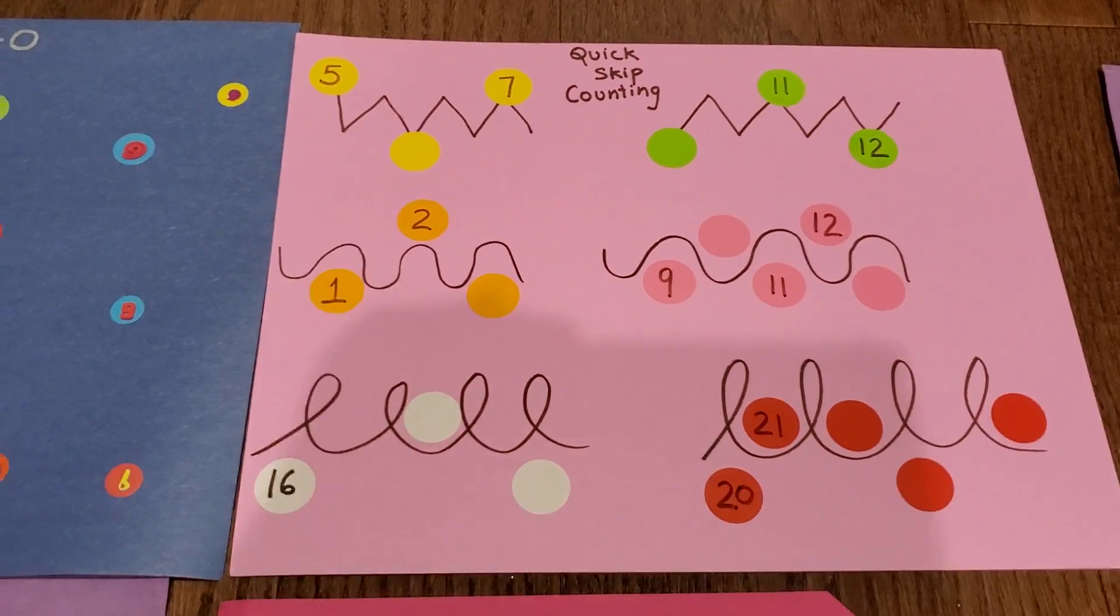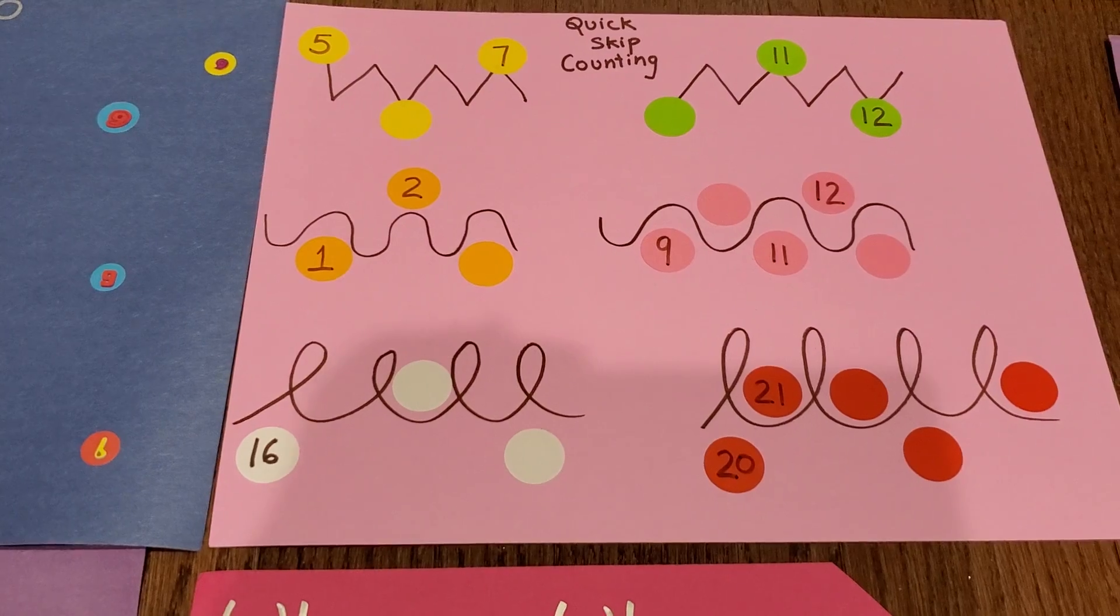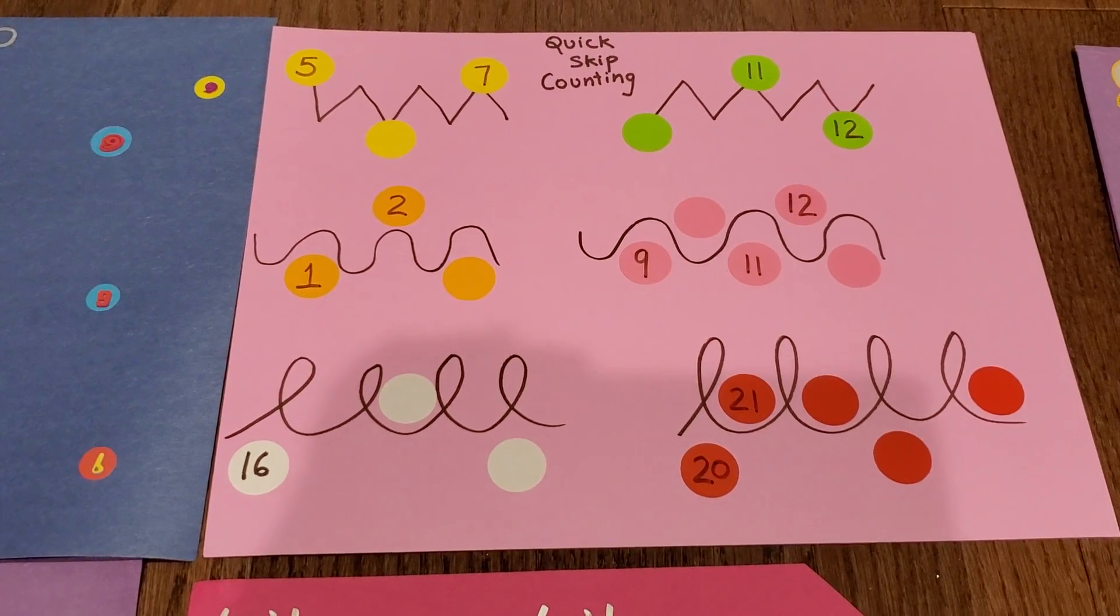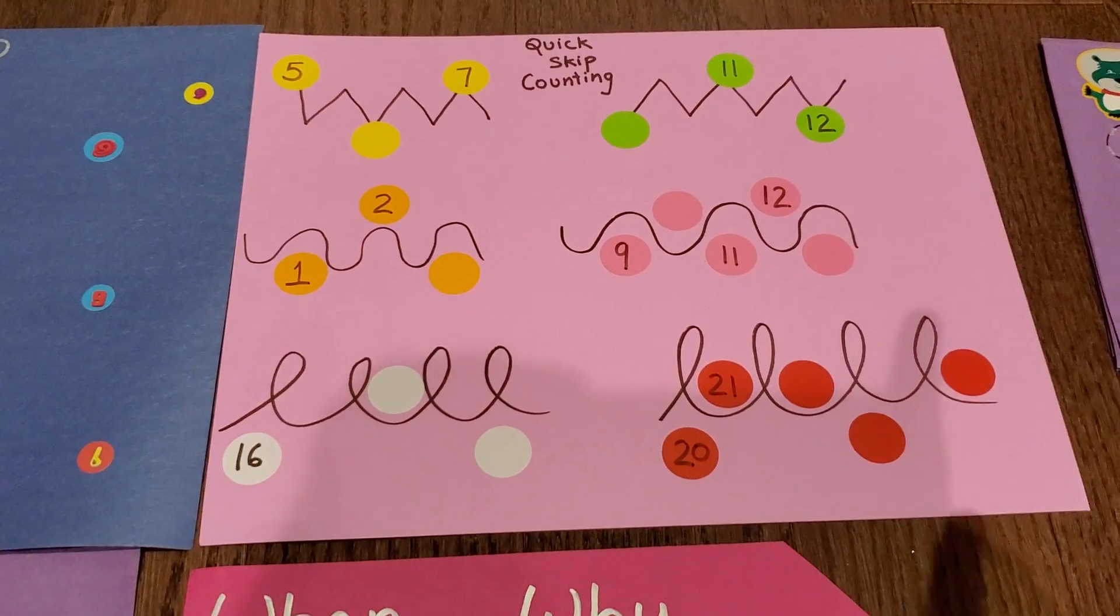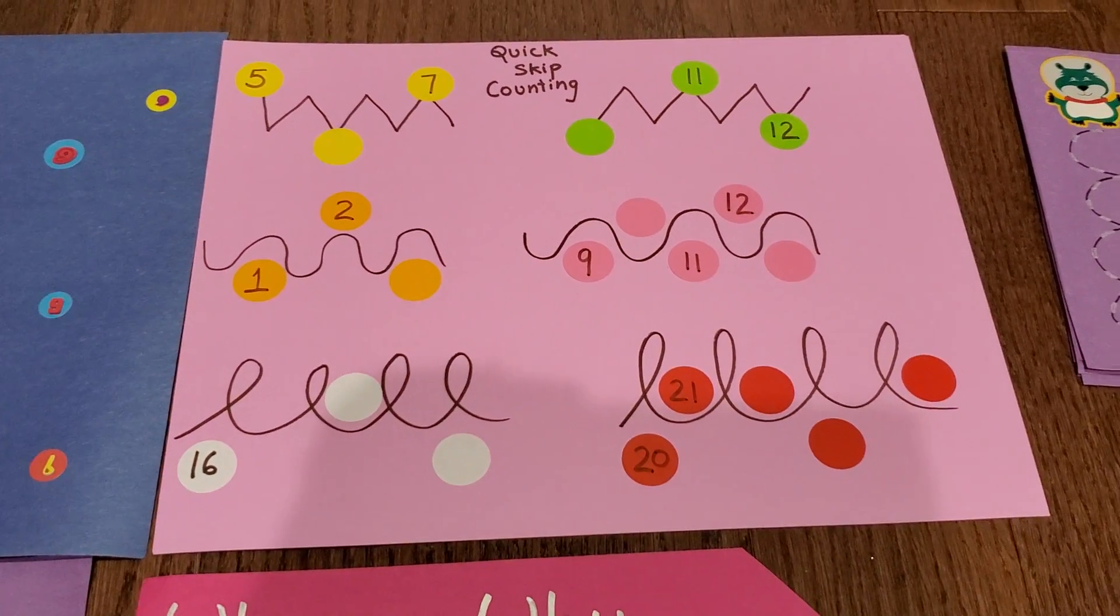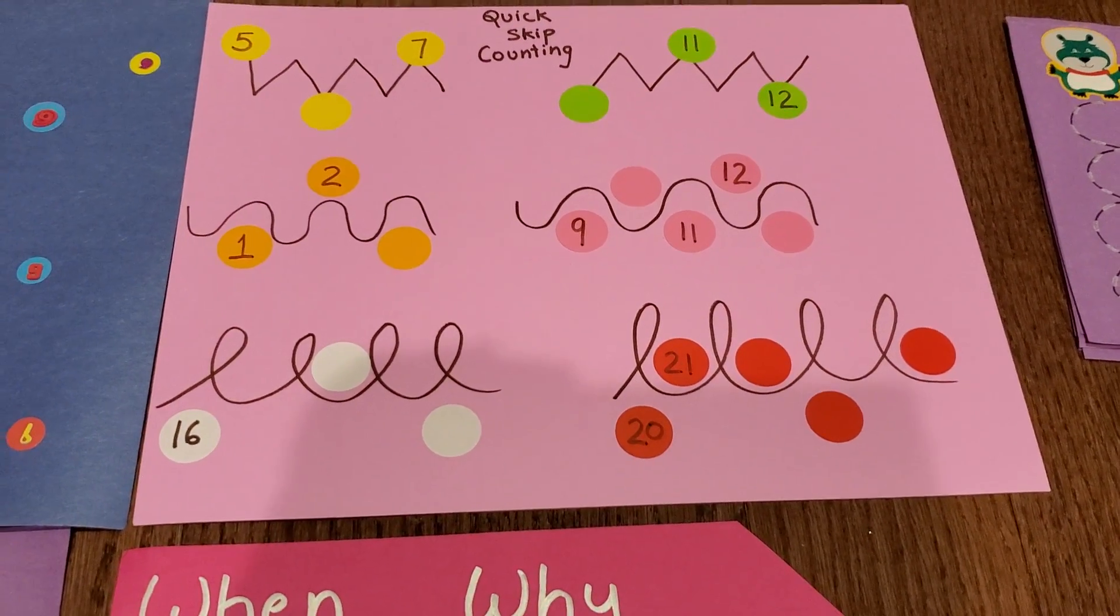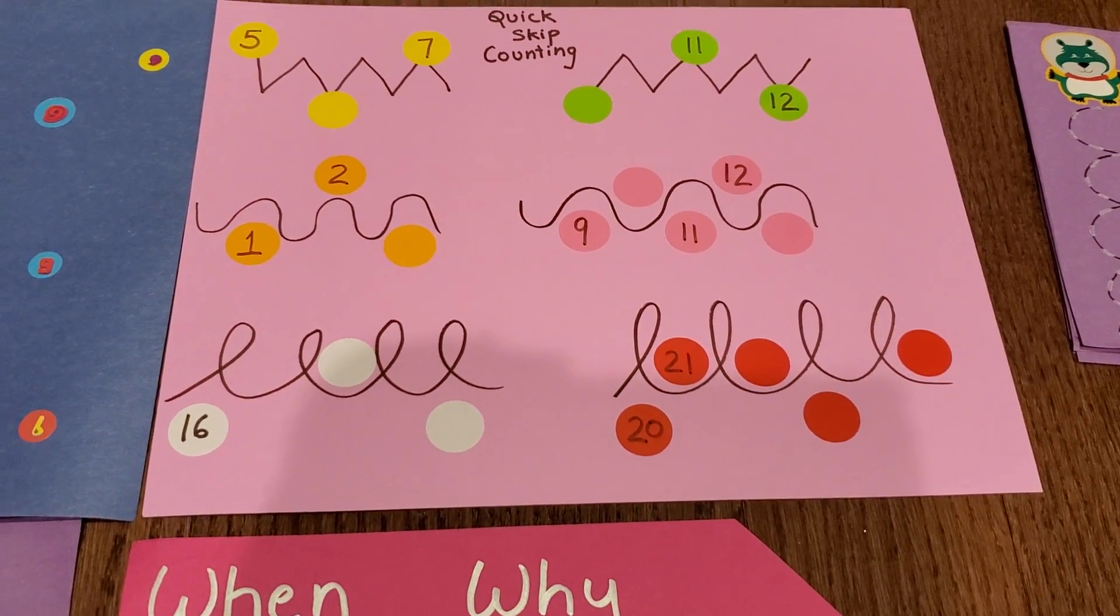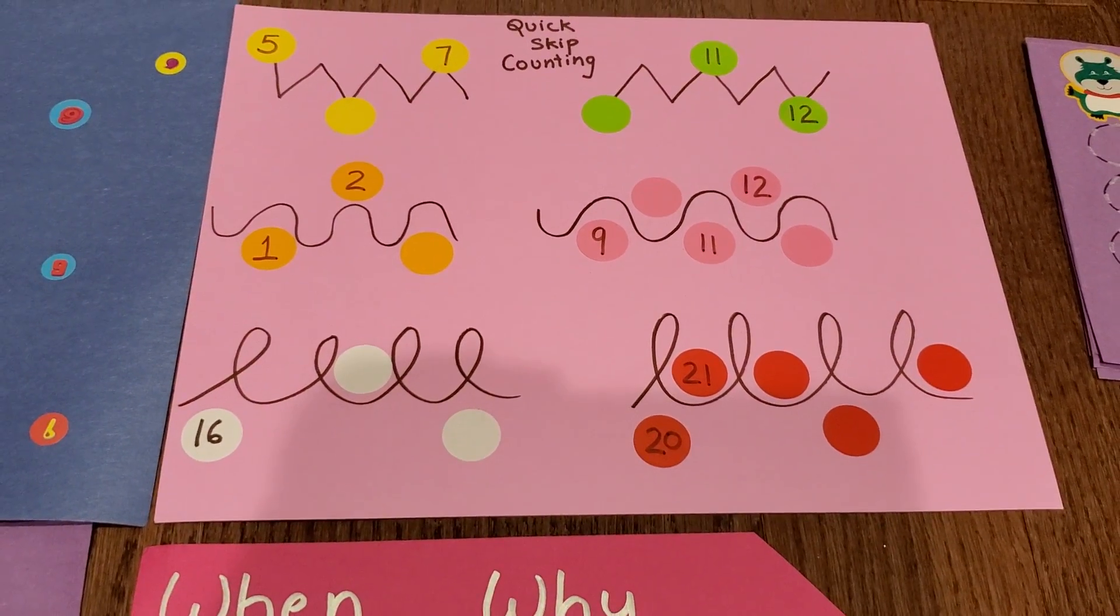As you can see, I've put three stickers and written 5, then there's a blank, and then 7. So what's missing in between 5 and 7? The same thing with the other examples. There are six examples here which is just simple skip counting. It's not very difficult. I haven't done anything great here. I've just assembled a couple of things that I had.